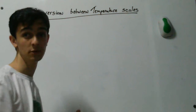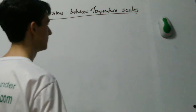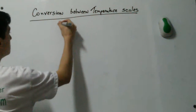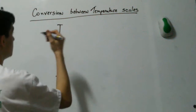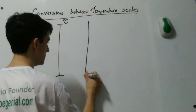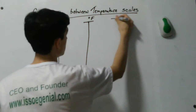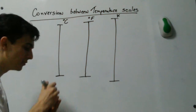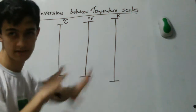We're going to see the conversion between Celsius, Fahrenheit and Kelvin. Let's imagine we have a thermometer for each of the scales. This bar is going to represent the temperatures in degrees Celsius, this bar in degrees Fahrenheit, and this bar in Kelvin. Note that we use the word 'degree' for Celsius and Fahrenheit but not for Kelvin — we just say Kelvin.